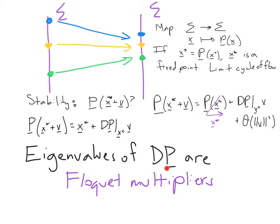And in this particular setting, in the map setting, these eigenvalues are referred to as Floquet multipliers. And we don't care about whether they're negative or positive. That's not the thing we're interested in.